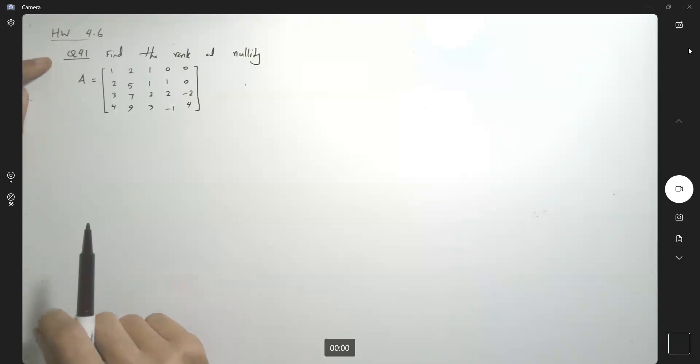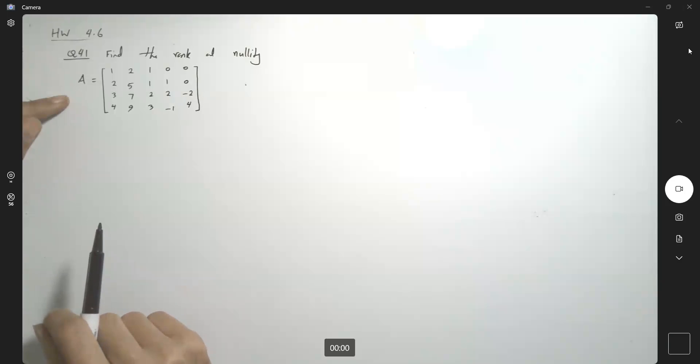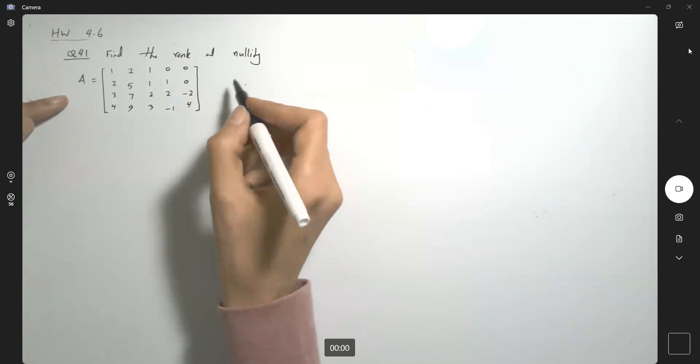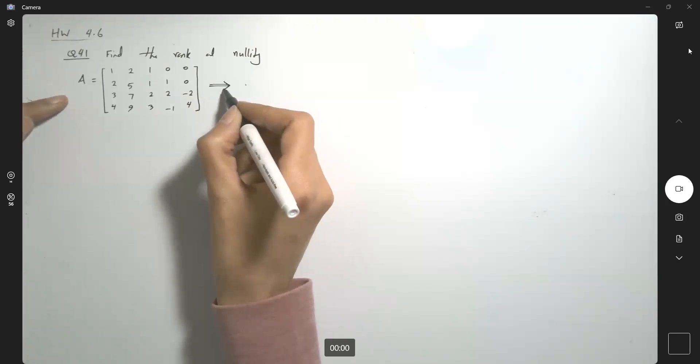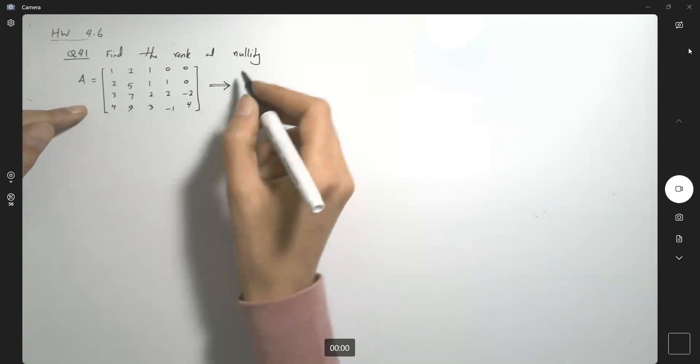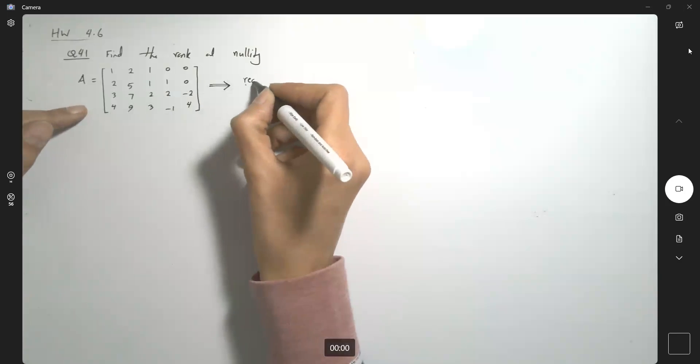The question says: find the rank and nullity of the following matrix. In the very first step, we're going to write this in reduced form.